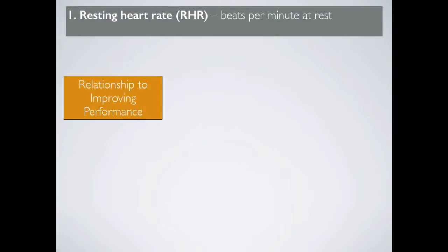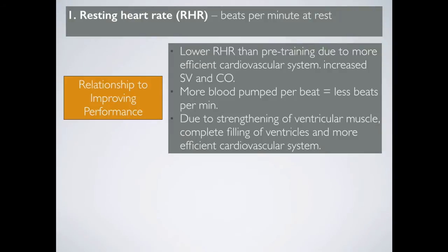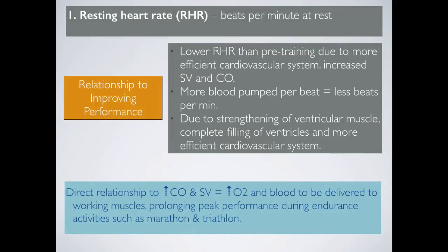Resting heart rate can be closely related with stroke volume and cardiac output. Trained athletes have a cardiovascular system that works very efficiently, so their heart is stronger and can push more blood out of the left ventricle with each beat. This means fewer beats are required per minute to move the same amount of blood around the body as an untrained individual. Fit athletes will generally have a lower resting heart rate, due to strengthening of the ventricular muscles, complete filling of the ventricles, and a more efficient cardiovascular system. This leads to increased oxygen and blood delivered to working muscles, prolonging peak performance during endurance activities such as marathon and triathlon.